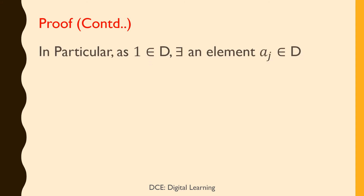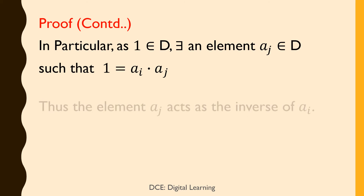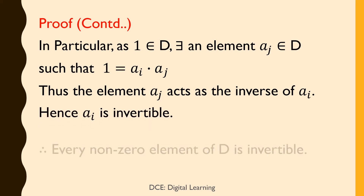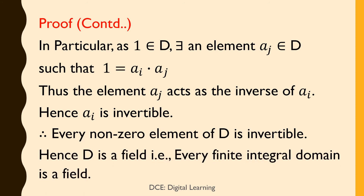In particular, since 1 belongs to D, there exists an element aⱼ belonging to D such that 1 = aᵢ·aⱼ. Thus, the element aⱼ acts as the inverse of aᵢ. Hence, aᵢ is invertible. Therefore, every non-zero element of D is invertible. Hence, D is a field — that is, every finite integral domain is a field. This completes the proof of the theorem.